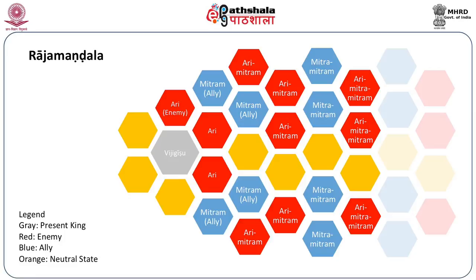The second layer — the people beyond the first arc of red — are shown in blue; they are the neighbors of neighbors. These are described as Mitram (allies, friends) by Chanakya — your enemy's enemy is your friend, though some could be neutral. The third layer — the neighbor of the neighbor's neighbor — is called Arimitram, the friend of the enemy. So the first level neighbor is the enemy, the second level is the friend (being your enemy's enemy), and the third level is friend of the enemy, and so on it goes.